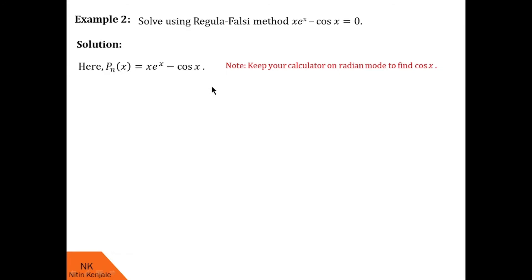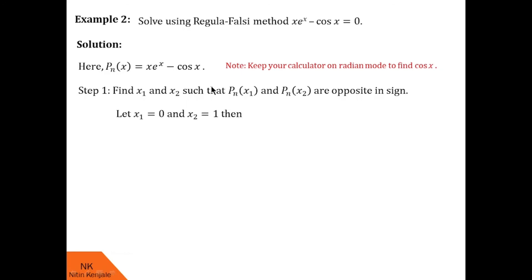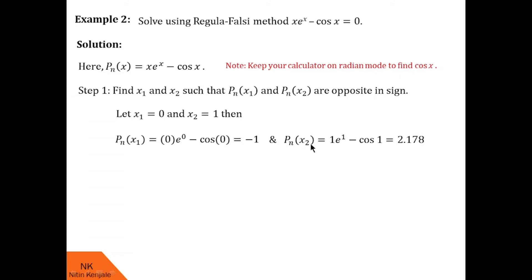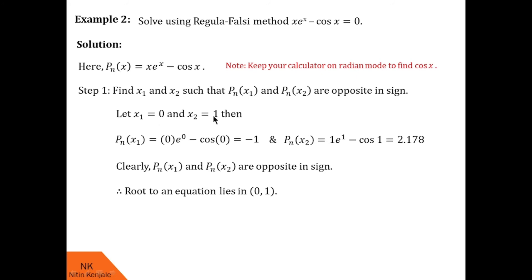Now we go for Step 1. We have to find x1 and x2 such that f(x1) and f(x2) are opposite in sign. I choose x1 = 0 and x2 = 1. Then f(0) = 0·e⁰ − cos 0 = −1, and f(1) = 2.178. Clearly f(x1) and f(x2) are opposite in sign, so the solution lies in the interval [0, 1].